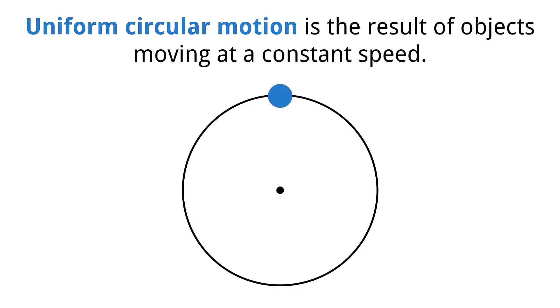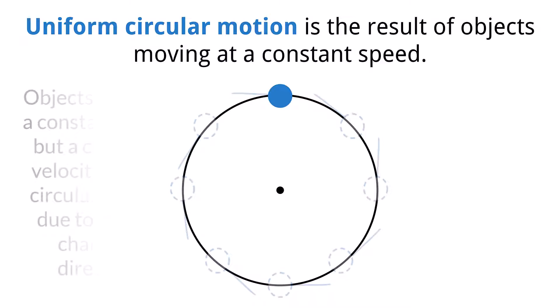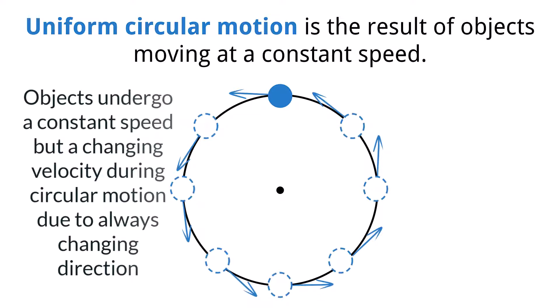When an object moves in circles at a constant speed, we consider the object to be undergoing uniform circular motion. An important distinction about this motion is that the object does not have a constant velocity but a constant speed. Remember, velocity has a magnitude and a direction. Because of the nature of circular motion, the object is constantly changing its direction. Therefore, the velocity is always changing. Since the velocity is changing, we consider all objects undergoing uniform circular motion as accelerating.